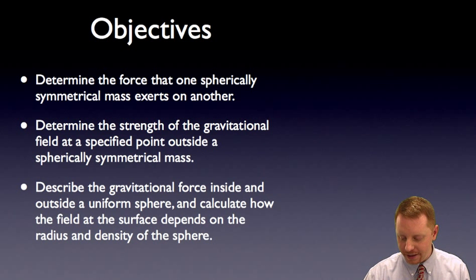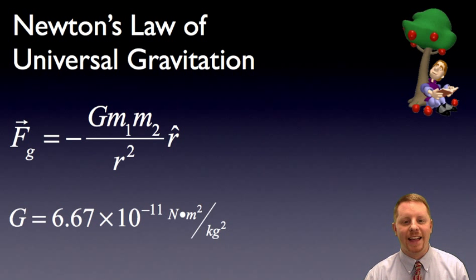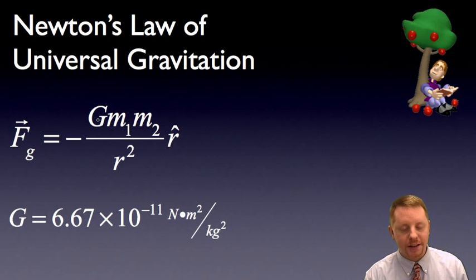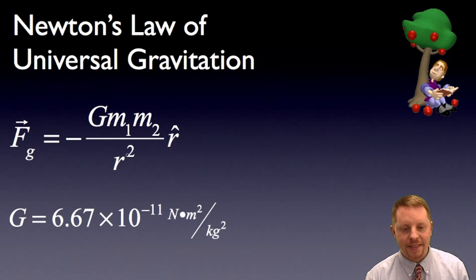Newton's law of universal gravitation tells us that there is a force of attraction between any two objects that have mass. If you take the distance between the center of their masses — that's r — you can calculate the force by this constant, capital G, times the mass of the first object in kilograms, times the mass of the second object in kilograms, divided by the square of the distance between the center of their masses. And that force is in the direction of each other.